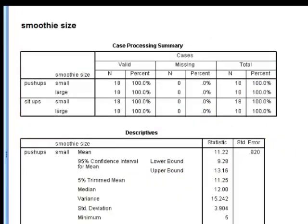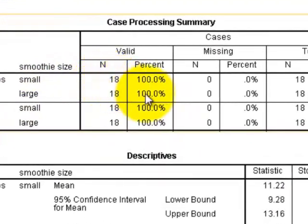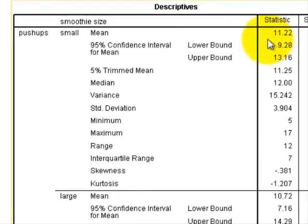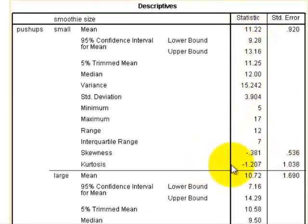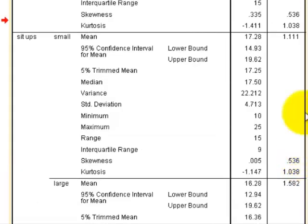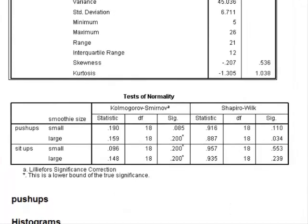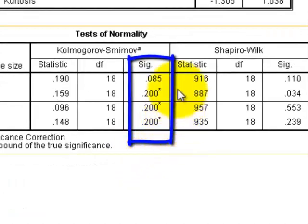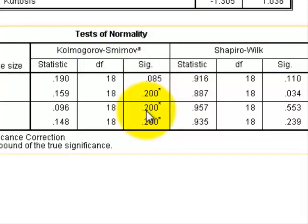Now let's check the smoothie size — that first one was just the drug dose. Here's the smoothie size. It tells us how many are in each group: 18 for small, 18 for large. Looking at the overall descriptives, the skewness and kurtosis are not that bad — not as bad as the other one. They all look pretty good. According to the Kolmogorov-Smirnov test, none of them were violated, so we are good to go.